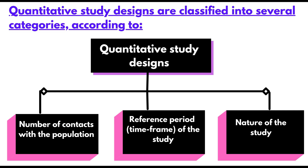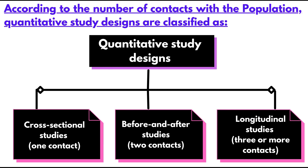Quantitative study designs are classified into several categories according to number of contacts with the population, reference period, or time frame of the study, and nature of the study. According to the number of contacts with the population, quantitative study designs are classified as cross-sectional studies (one contact), before and after studies (two contacts), and longitudinal studies (three or more contacts).